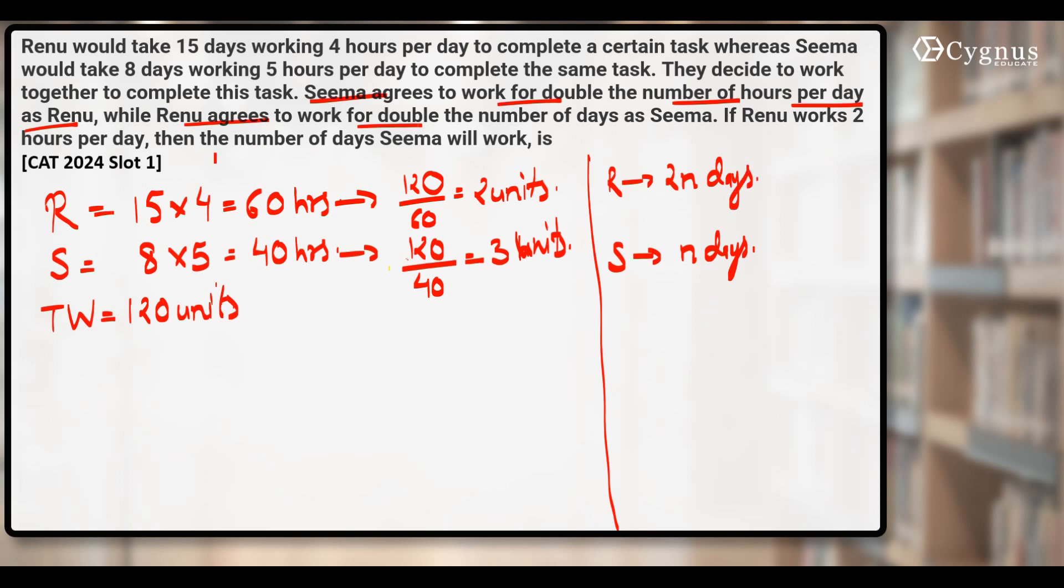The last line says that Renu works 2 hours per day. She will work for 2 hours for 2n days, so the effective working hours of Renu will become 4n. Seema has worked for n days and will be working for double the number of hours of Renu, so double of 2 becomes 4, meaning Seema will also work for 4n hours.